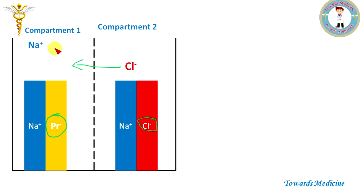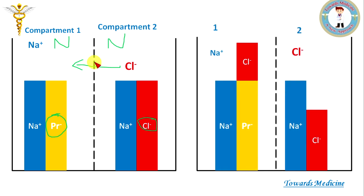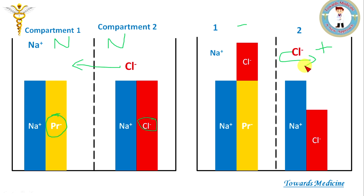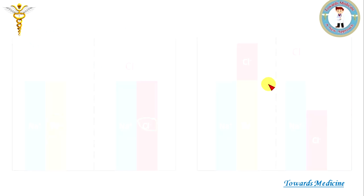Initially both compartments were electrically neutral, but when chlorine moves to compartment 1, compartment 1 becomes electrically negative while compartment 2 becomes electrically positive. The negativity in compartment 1 will stop the further movement of chlorine. At the same time, the negativity developed in compartment 1 will attract the sodium of compartment 2 to maintain its electrical neutrality.